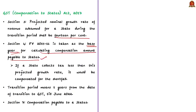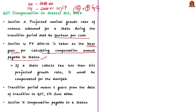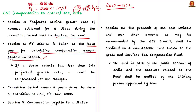If a state collects less tax than the projected growth rate, it would be compensated for the shortfall. For example, if Tamil Nadu got revenue of 100 rupees last financial year, it is estimated Tamil Nadu would get 114 rupees this year at 14 percent growth. If Tamil Nadu gets only 110 rupees, the central government pays the 4-rupee shortfall. This five-year period runs from 2017 to 2022. To fund this compensation, a compensation cess is levied and the proceeds are credited to a non-lapsable fund known as the GST Compensation Fund.